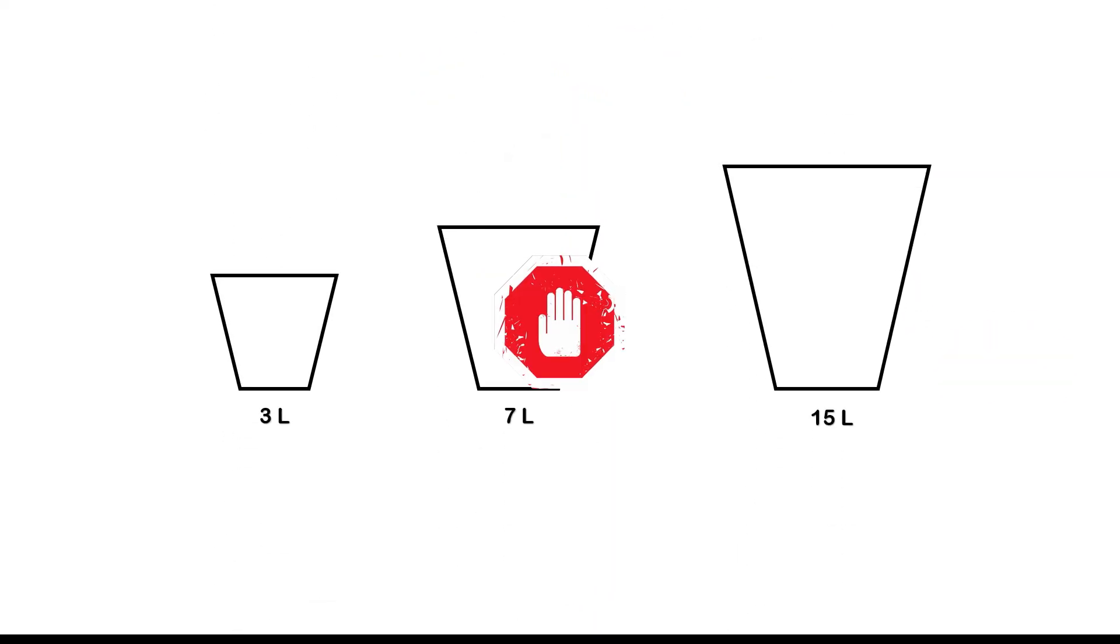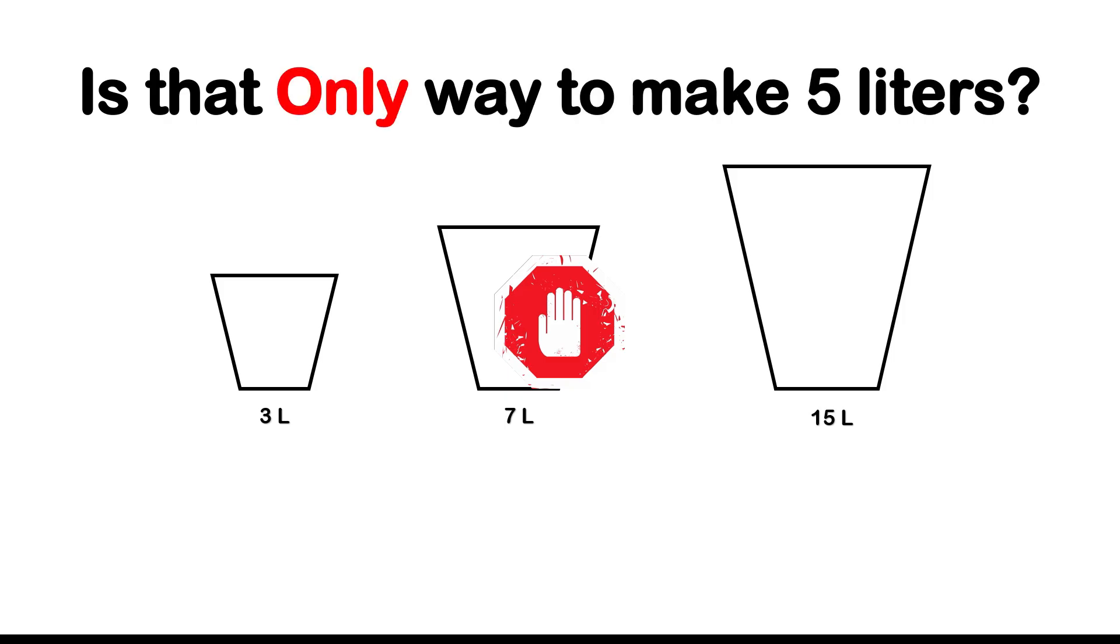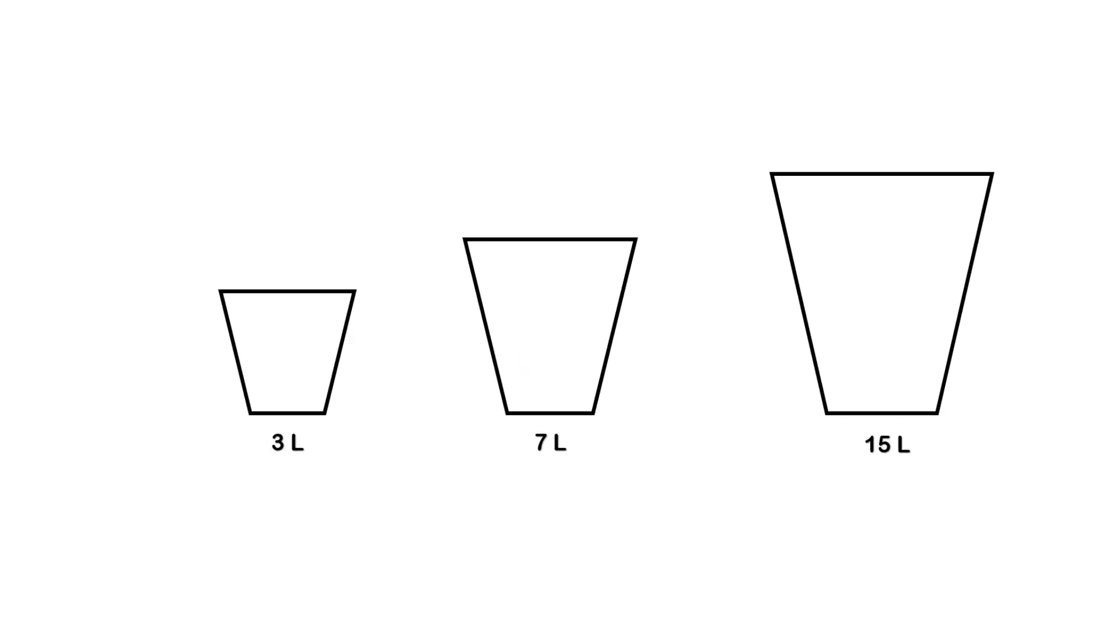But wait, here's something important. That's not the only way to make 5 liters. There's actually another method. And this is where the problem gets a lot more interesting. We can actually think of the puzzle as a simple little equation. 3 times x plus 7 times y equals 5.